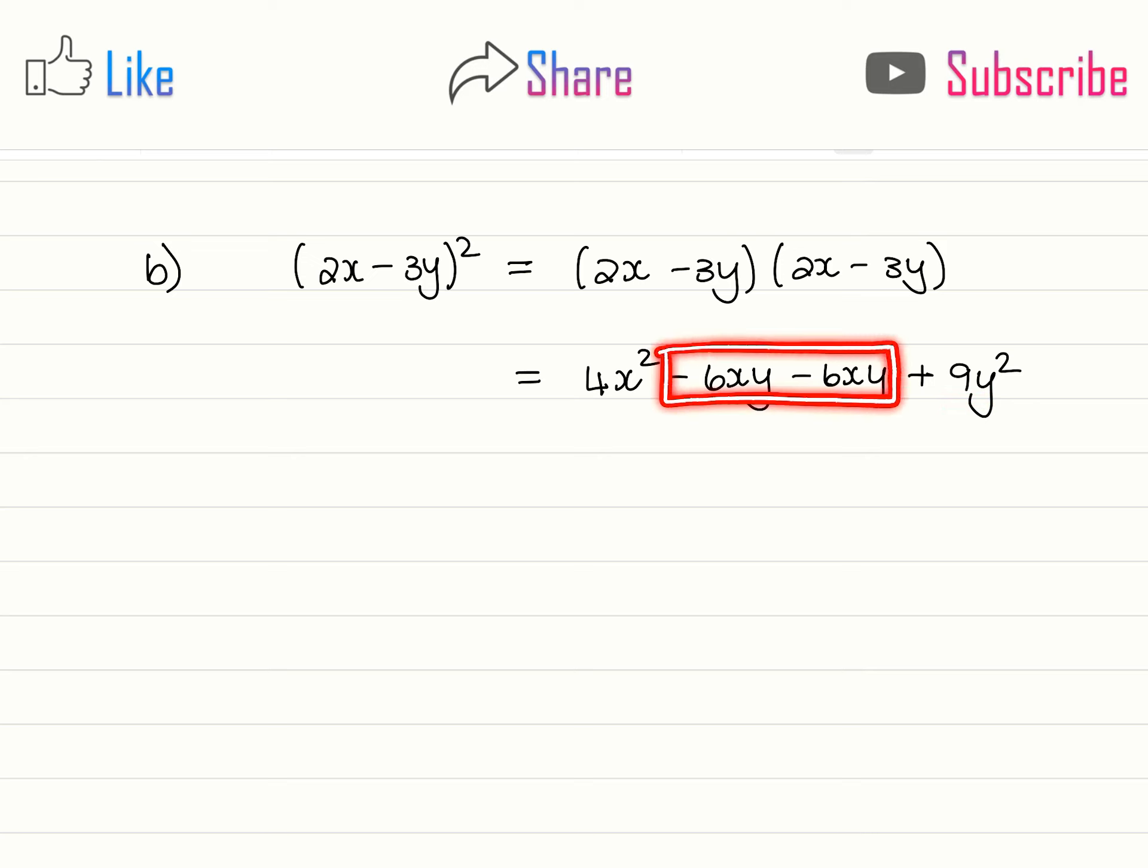And in this case we have negative 6xy and negative 6xy, which are like terms. So our final answer would be 4x squared minus 12xy plus 9y squared.